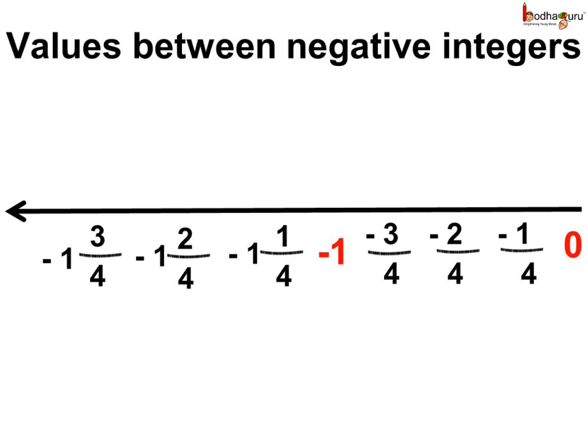So, there are negative fraction values on the left of 0 like minus 1 by 4, minus 2 by 4 etc. These are situated between 0 and minus 1.